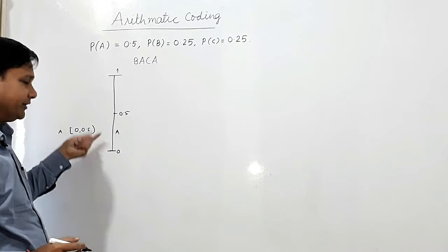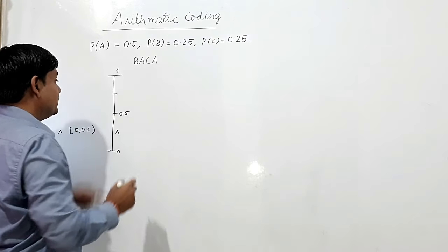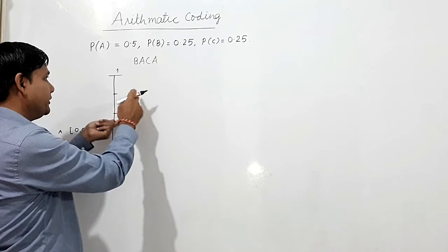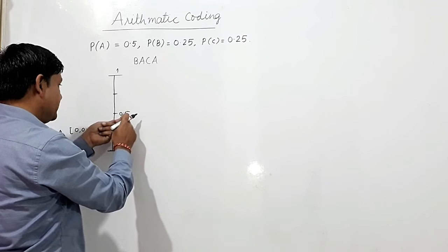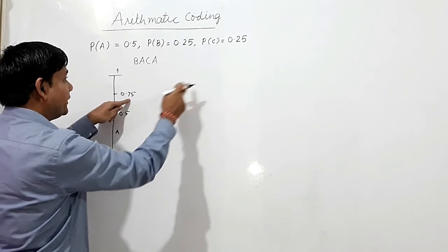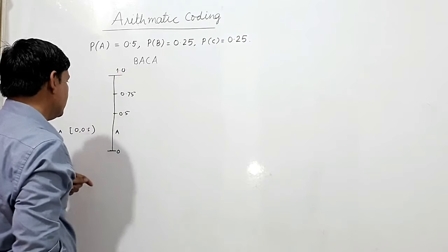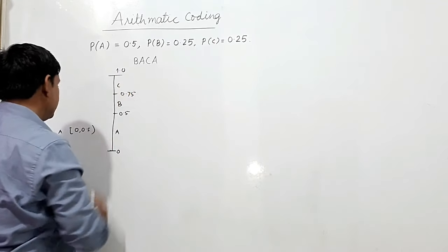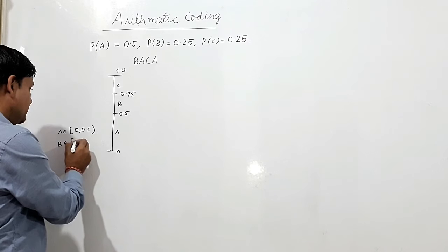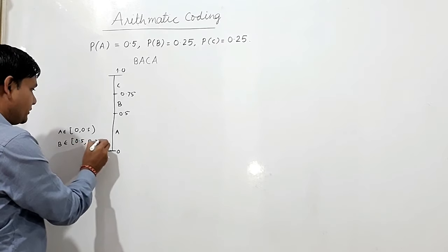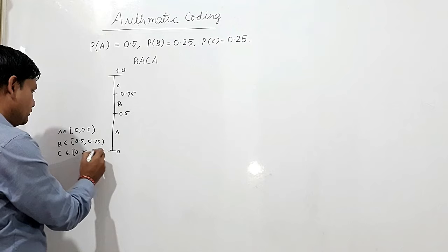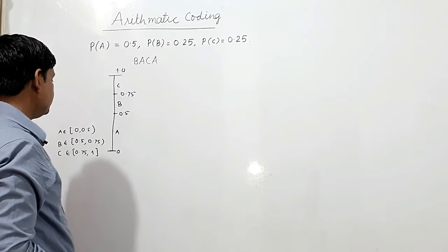B has probability 0.25, so B's interval starts from 0.5 to 0.75 — adding 0.25 to 0.5 gives 0.75. Adding 0.25 to 0.75 gives 1.0, so C's interval is 0.75 to 1.0. B lies in the closed interval [0.5, 0.75) and C lies in [0.75, 1.0).